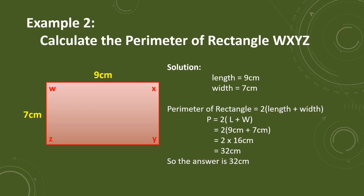For example number 2, the problem is calculate the perimeter of rectangle WXYZ. The given length is 9 cm and the given width is 7 cm. We just follow the steps from example 1: substitute the value of the length and width, then add and multiply it by 2. We have 2 times 9 cm plus 7 cm, then 2 times 16 cm since 7 plus 9 equals 16, and 2 times 16 cm equals 32 cm. Therefore, the perimeter of rectangle WXYZ is 32 cm.